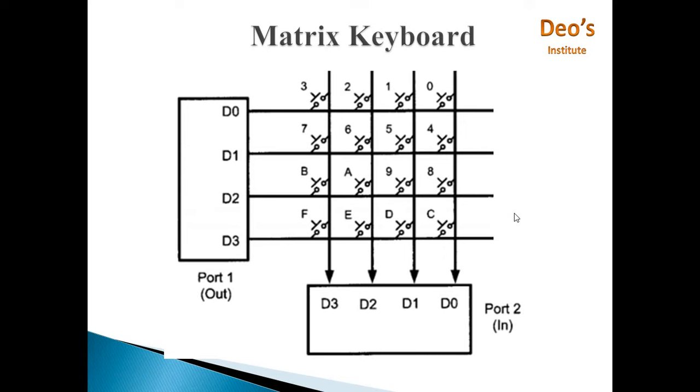Here we have used a 4 by 4 keyboard. It contains total 16 pins. These pins are interfaced in a row and column fashion. Port 1, four rows are connected to port 1 and port 1 is an output port on the microcontroller.